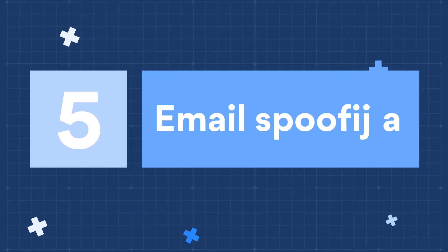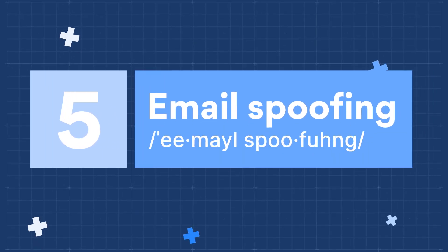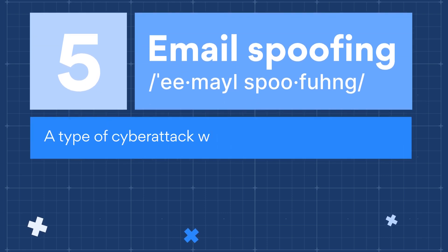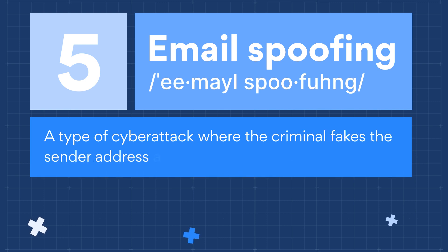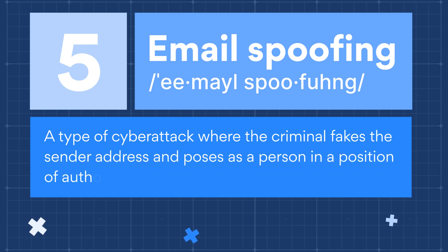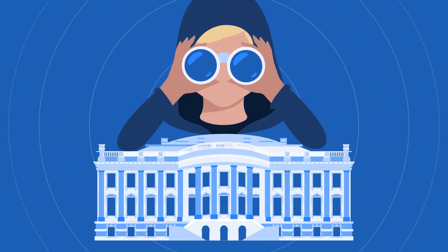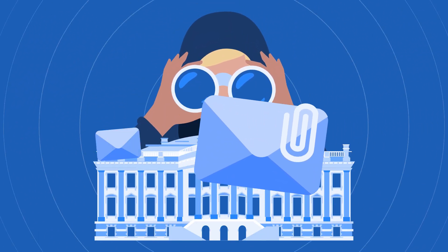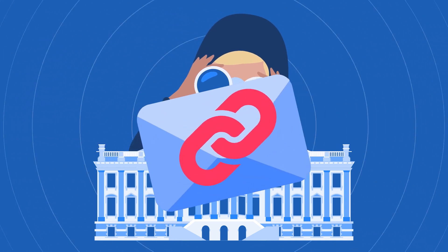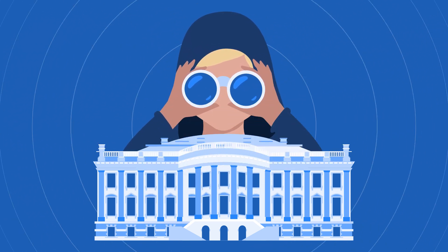Number 5: Email Spoofing. Email spoofing, also known as an email spoofing attack or an email spoof, is a type of cyber attack where the criminal fakes, or spoofs, the sender address, and poses as a person in a position of authority, like a bank or government representative, or an acquaintance of the victim. The attacker wants to lower the victim's guard to then trick them into clicking a link to a malicious website or downloading an infected attachment.